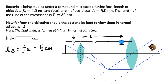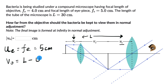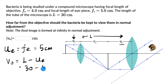Knowing this, we can figure out the image distance V0, which comes out to be equal to L minus the object distance UE. So this is 30 minus 5 centimeters, which comes out to be 25 centimeters.